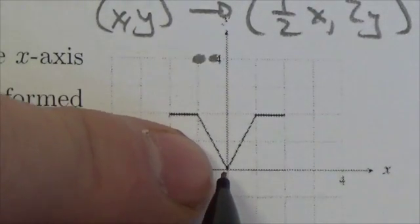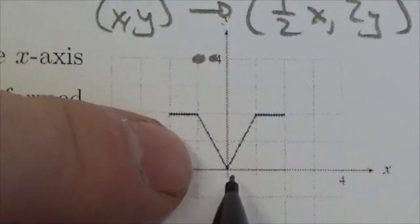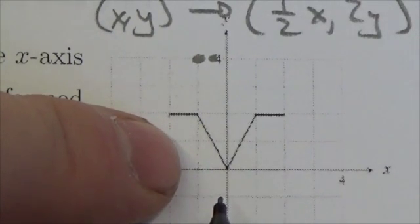This one, this is a great one here, because the x and y-coordinates are both zero, so half of zero is zero, 2 times zero is zero.